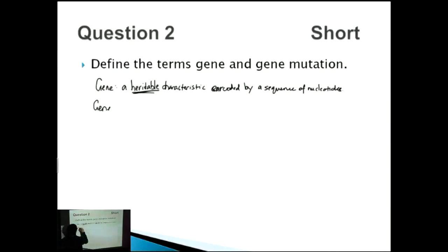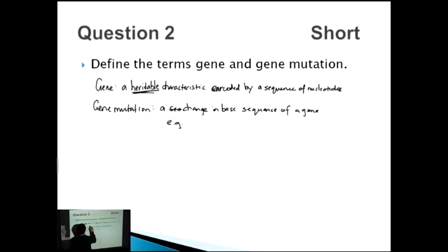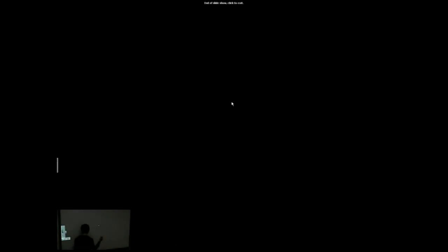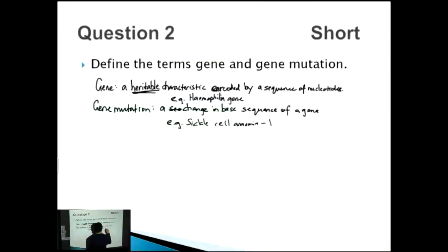A gene is encoded by a sequence of nucleotides. Gene mutation — as mentioned in the previous question — is a change in the base sequence of the gene. You should always give an example: an example of a gene is the haemophilia gene, and an example of a gene mutation is sickle cell anemia, which is a base substitution mutation.